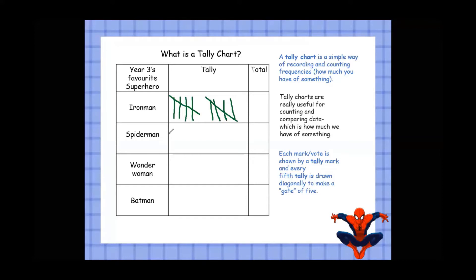Now there are two reasons we do this. The first reason is it's a lot easier, quicker, and more efficient to count in our five times table. So we have five, ten — I can see quite easily, without really counting, that there are ten there.